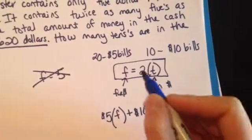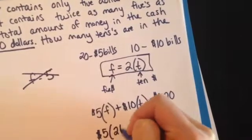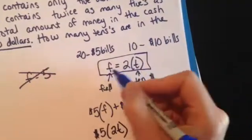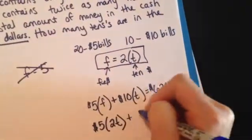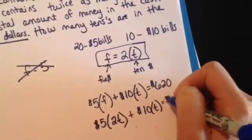So, I'm going to plug in for F the 2T. So, I'm going to have $5 times 2T, because that's what F equals, plus $10 times T, which equals $620.